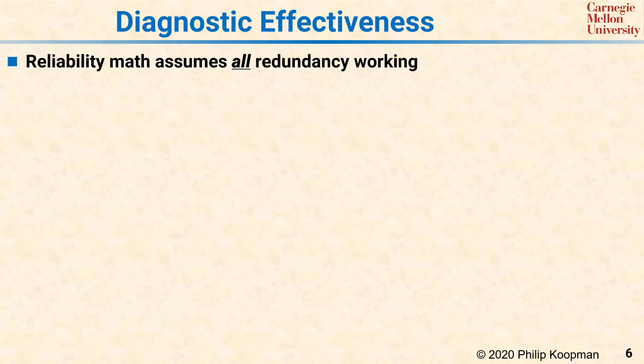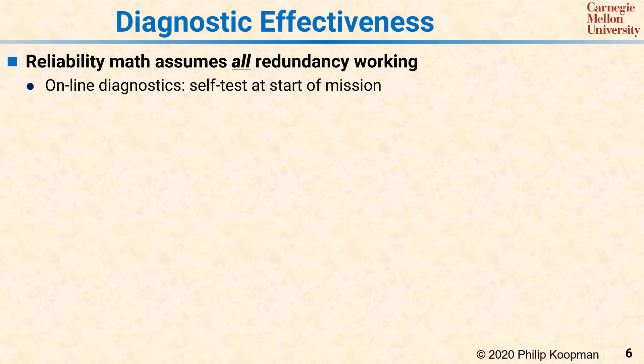A critical point when deploying redundancy is that while reliability math lets you assume only one component fails at a time, you also need to ensure that all components are working perfectly at the start of a mission—meaning you need to find and eliminate any latent faults before the mission starts. One way to find latent faults is with online diagnostics such as a self-test at mission start or continual background checks. While these cannot find all faults, they are certainly important for safety-critical systems. Creating a thorough self-test can be very challenging, so you should use a vendor-supplied library such as IEC 6730 self-tests if you can.